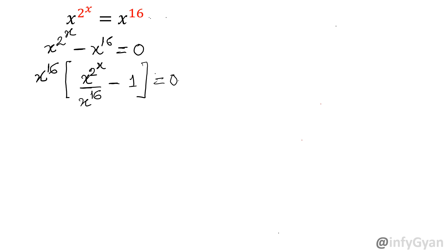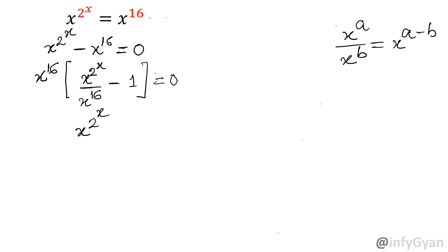You know one exponent property: x power a over x power b can be written as x power a minus b. So it will become x power 2 raised to the power x minus 16, minus 1, equal to 0, and outside x power 16 as it is.